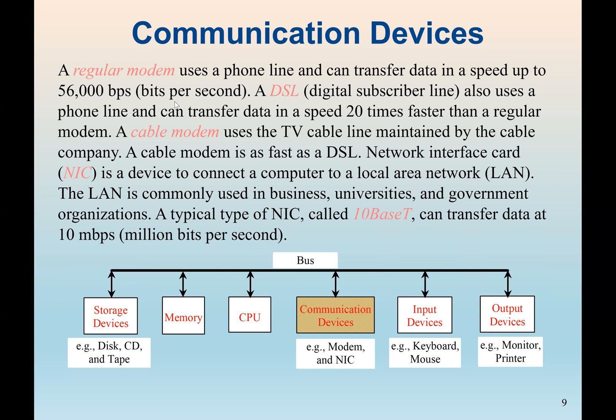Here we are talking about the internet. Also, we have the digital subscriber line, which also uses telephone line and can transfer data at a speed almost 20 times faster than the regular modem. Then we also have the cable modem, which normally TV cable companies subscribe to. So a cable modem is as fast as the DSL also. We also have the wireless system, et cetera.